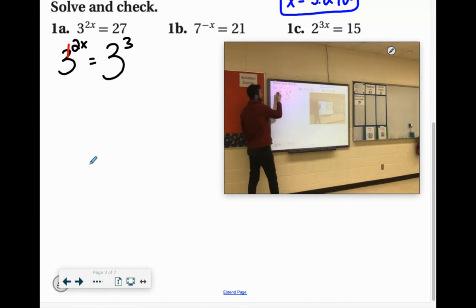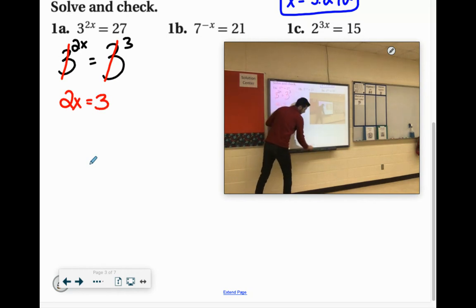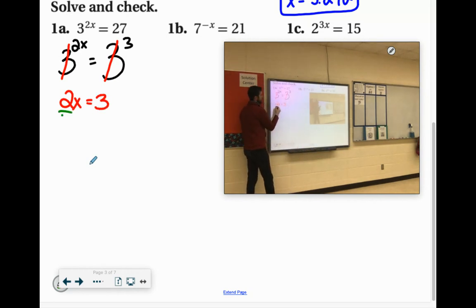The bases are the same, so we can just work on the exponents. We could log them both. 2x equals 3. And we just divide by 2. x equals 3 halves or 1.5.